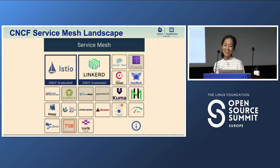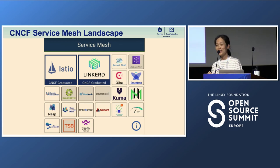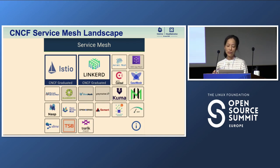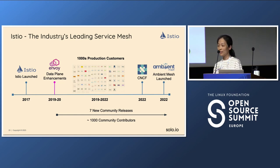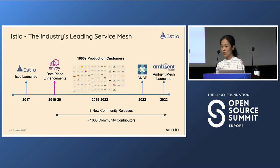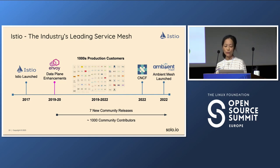This is the CNCF landscape — Istio is now a CNCF graduated project, and certainly the most popular service mesh out there, with thousands of production customers referenced on Istio.io. Last year we started the donation to CNCF as an incubation project, and recently we just graduated from CNCF as a graduation project.